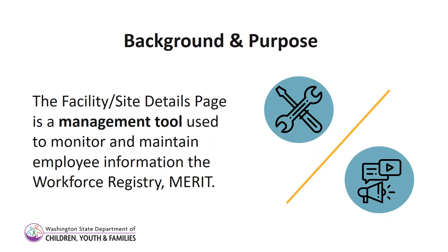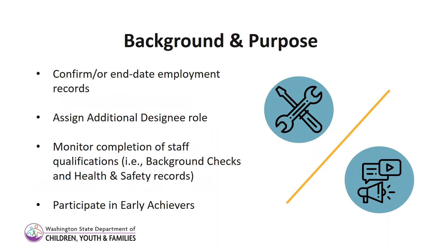After a primary contact has access to the Facility Site Details page, other staff can also have access to this management tool by being assigned the role of an additional designee in Merit and submitting a Facility Site Registration application. The Facility Site Details page is used to confirm or end date employment records, assign the additional designee role, monitor completion of staff qualifications like background checks and health and safety records, and to participate in early achievers.